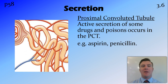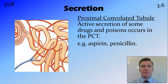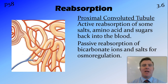The filtrate now in the proximal tubule is added to through the active secretion of drugs and poisons. Drugs such as aspirin and penicillin are actively moved — using energy — from the blood supply into the convoluted tubule so they can be excreted. There is also movement in the other direction: active reabsorption of salts such as sodium (bringing chloride with it), as well as amino acids, small proteins, and sugars back into the blood. We also have passive reabsorption of bicarbonate ions and other salts like potassium, which maintain salt levels in the body — osmoregulation.